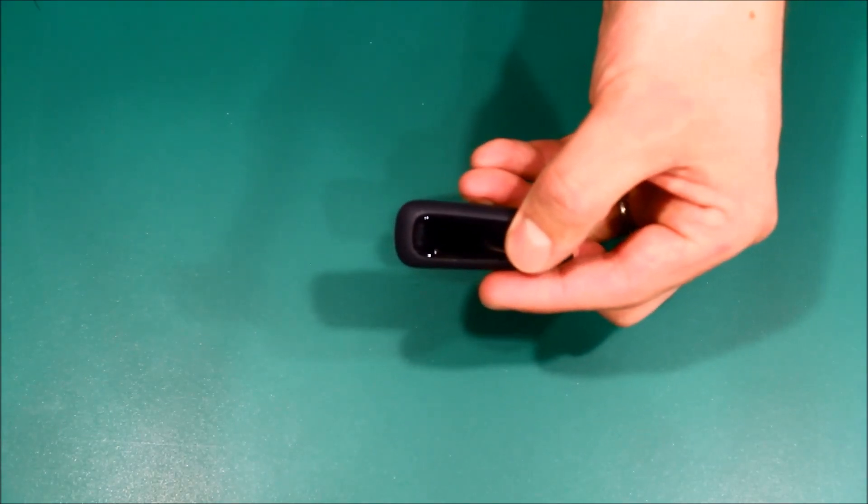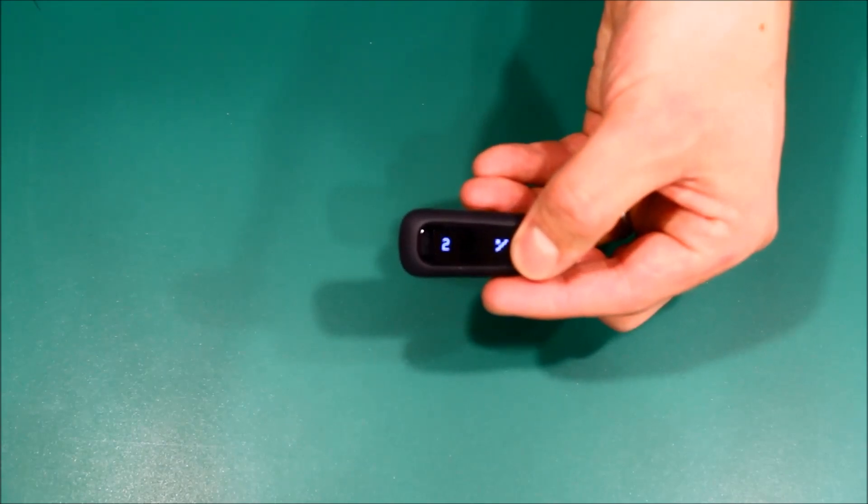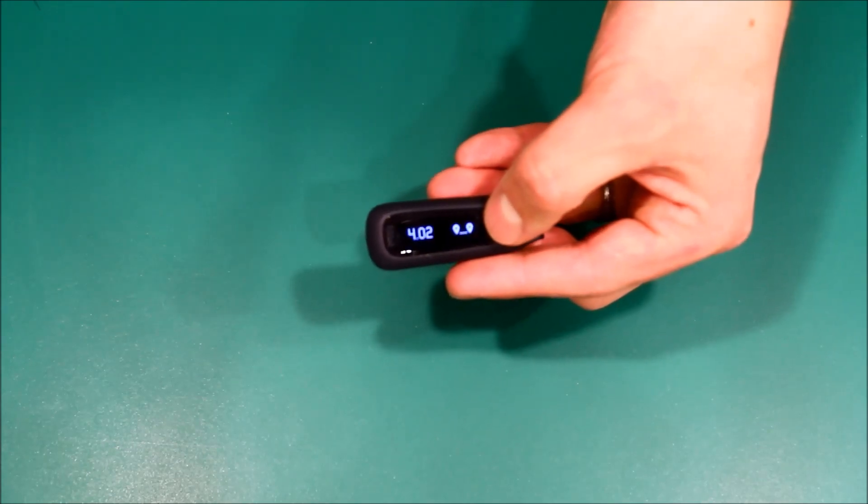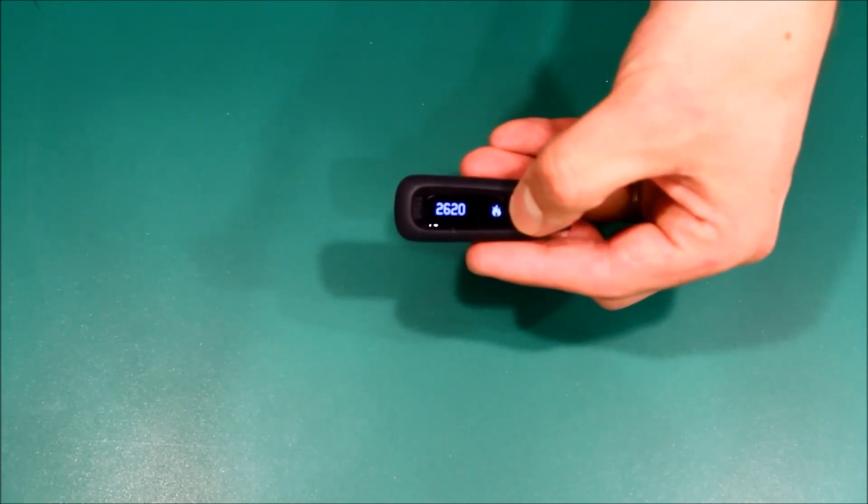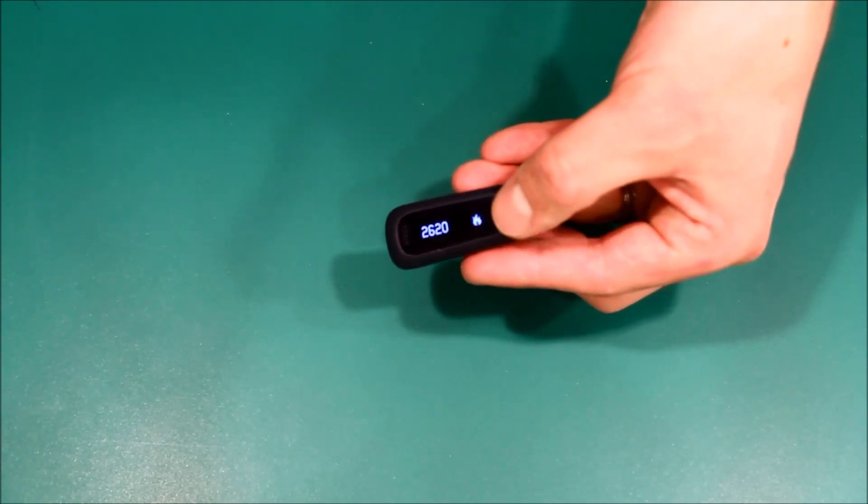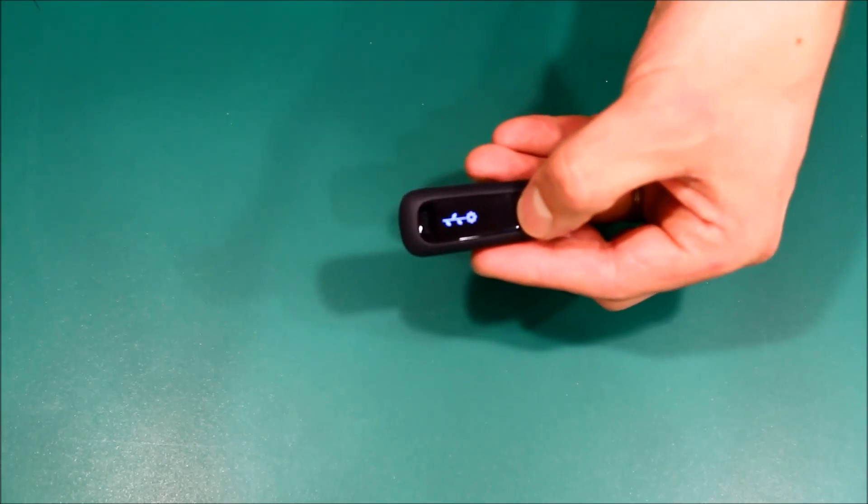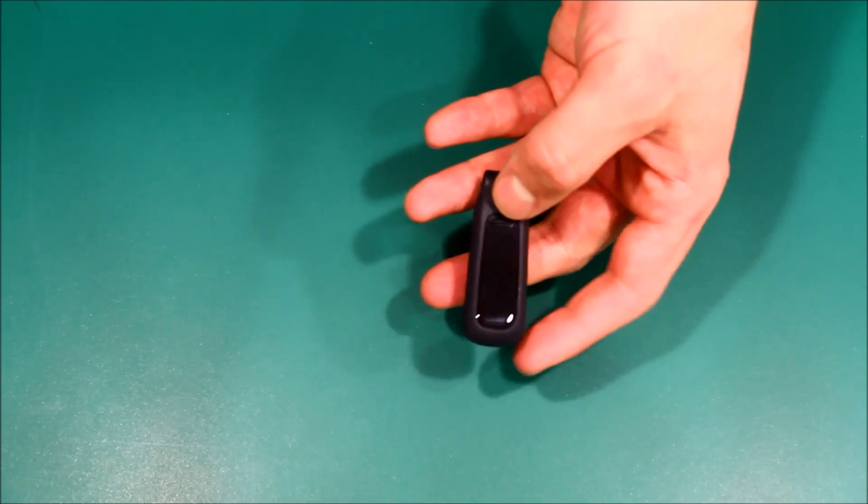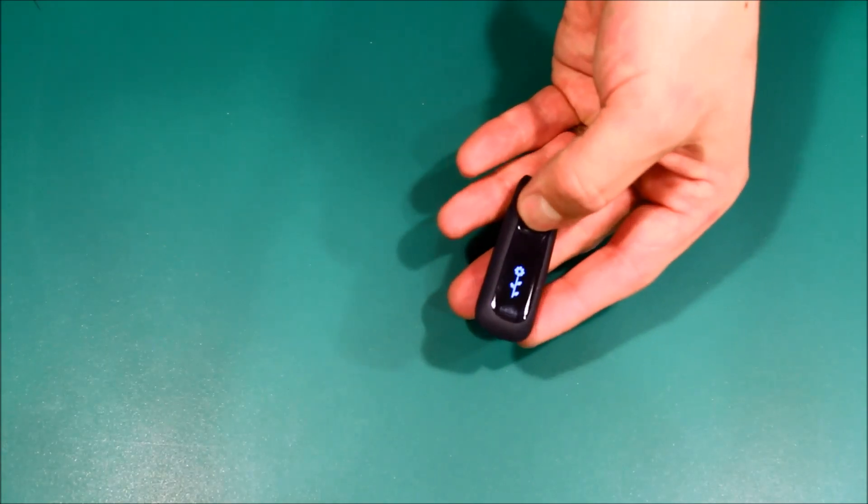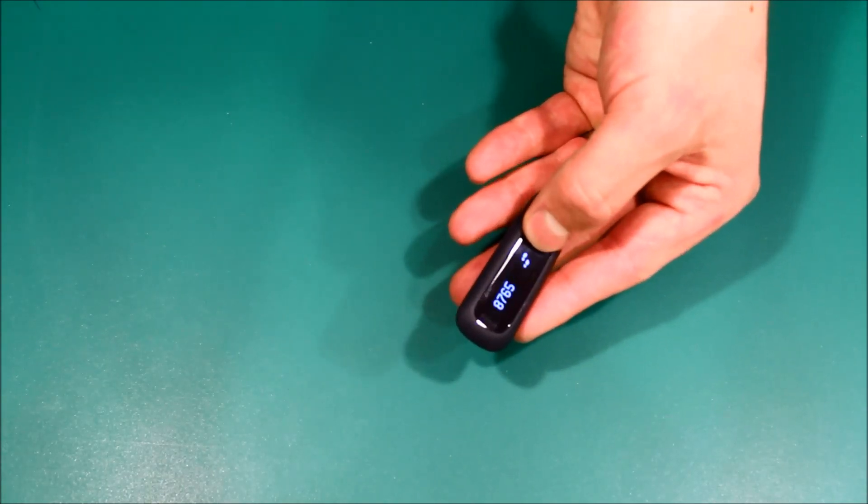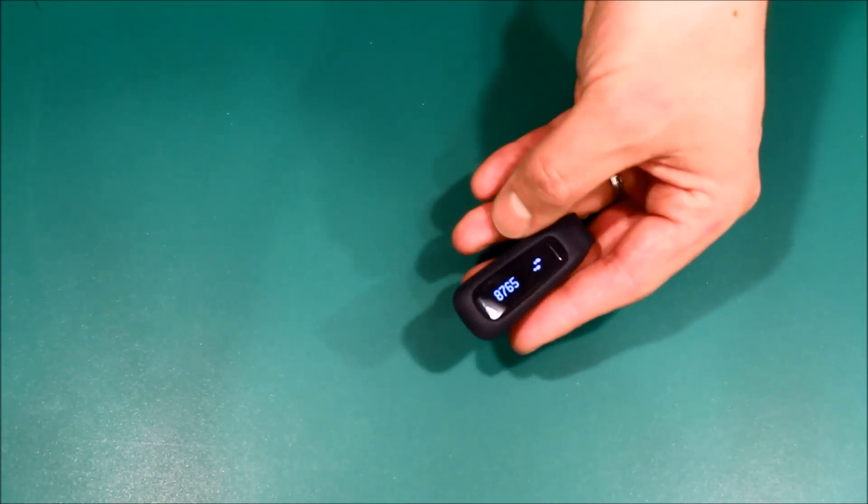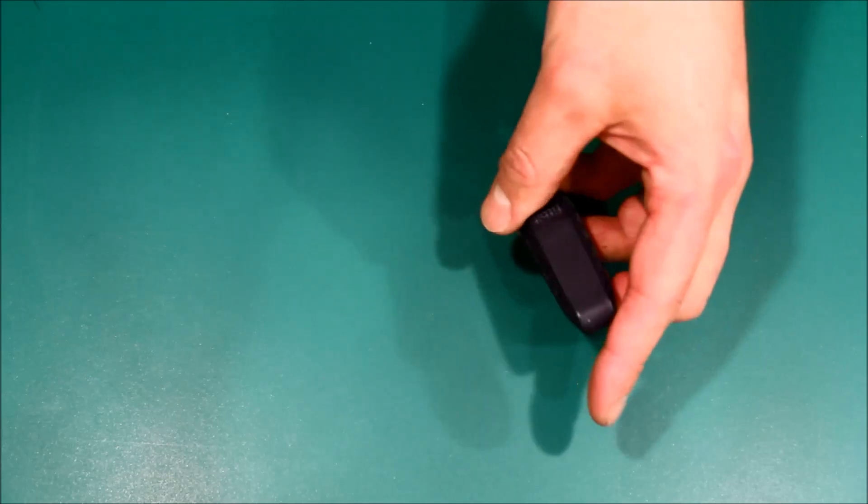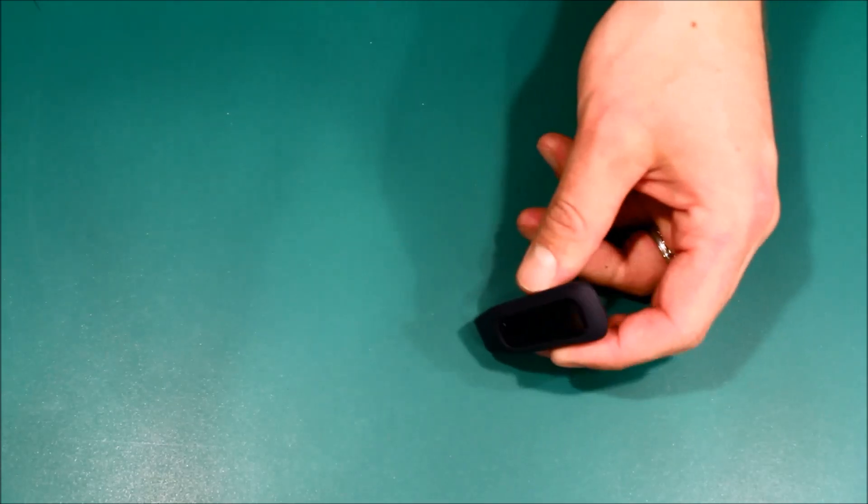Counts steps, counts how many flights of stairs you've climbed, the distance you've traveled, estimates your calories that you burn. There's a fun little flower - the taller it grows means the more active you are. My goal is to reach 10,000 steps a day. I'm at 8,700 so I got to do some more before bed.